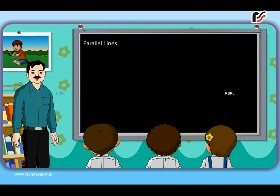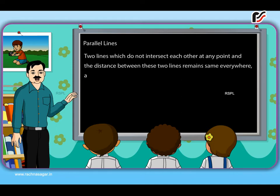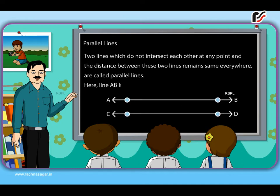Parallel lines. Two lines which do not intersect each other at any point and the distance between these two lines remains same everywhere are called parallel lines. Here, line AB is parallel to CD.